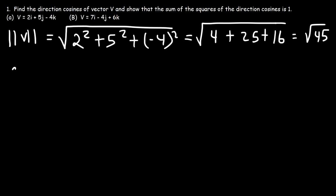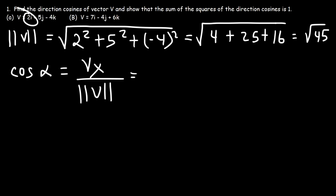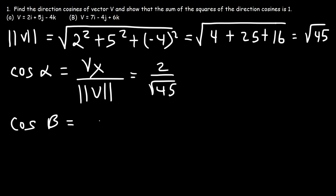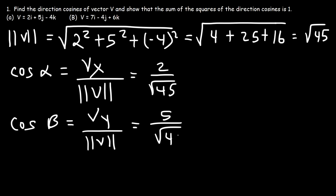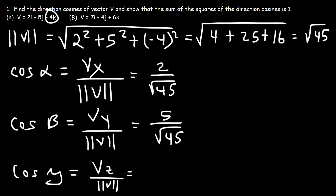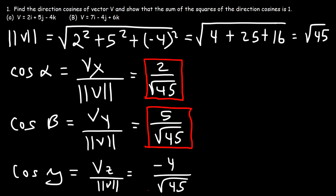Now let's find the direction cosines. Cosine alpha is the x component divided by the magnitude: 2 over the square root of 45. Cosine beta is the y component divided by the magnitude: 5 over the square root of 45. And cosine gamma is vz over the magnitude: negative 4 over the square root of 45. So those are the values of the three direction cosines.